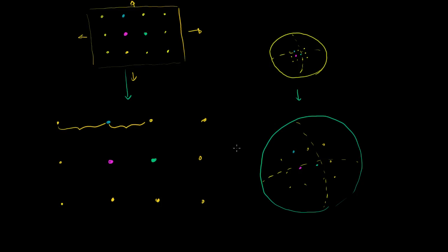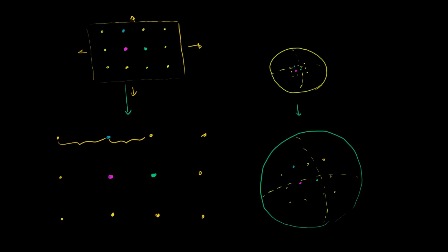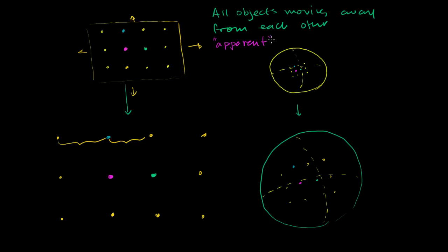Now let's think about how fast, or what is the apparent velocity with which things are moving away. We're going to say not only how far things are moving away, but how far they're moving away depending on how far they already are. All objects are moving away from each other, and the apparent relative velocity is proportional to distance. What I've just written down here is a rephrasing of essentially Hubble's law.